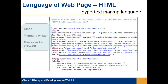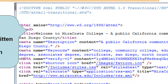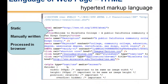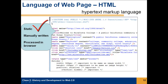The language of the web page is written in what is called HTML, the Hypertext Markup Language. It is a text-based markup language. It is manually written and interpreted by the browser. And it is static — by static, we mean that what is written is written; it doesn't change.